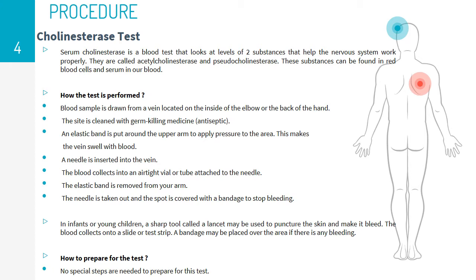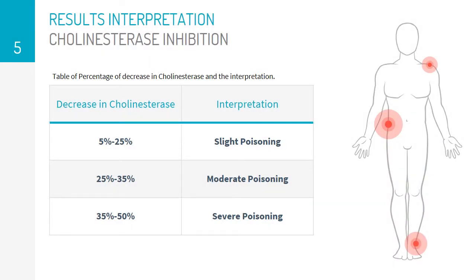Preparation required: no special preparations are needed prior to the test. Next, we will move on to result interpretation for cholinesterase. A 5-25% depression in cholinesterase means that slight poisoning has taken place. A 25-35% drop signals moderate poisoning, and a 35-50% decline in cholinesterase readings indicates severe poisoning.